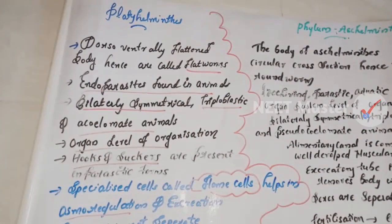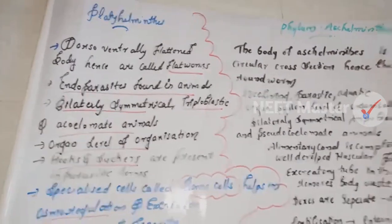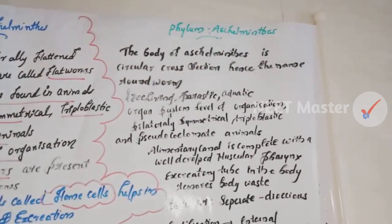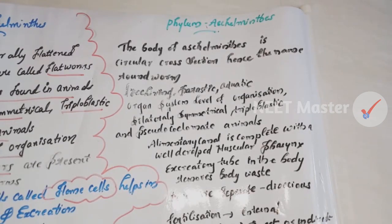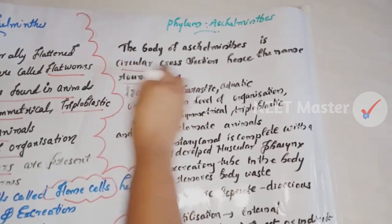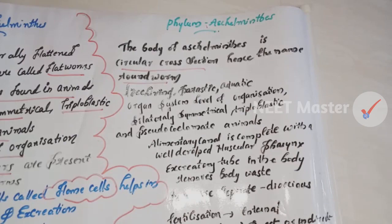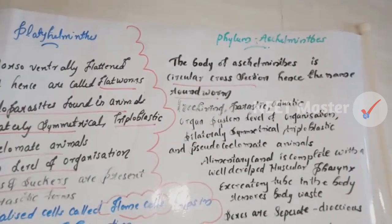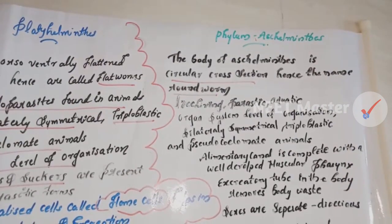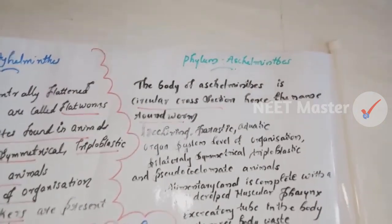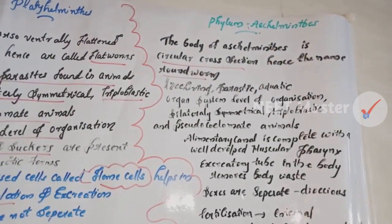Phylum Aschelminthes. The body of Aschelminthes has a circular cross-section — that is why they are called roundworms. They are free-living, aquatic, or terrestrial organisms.